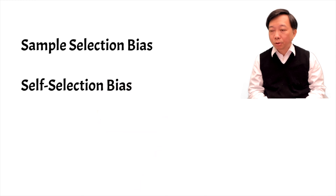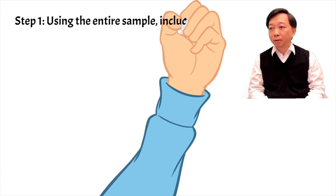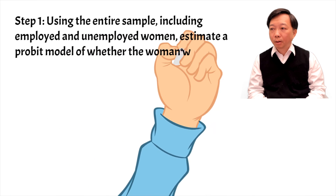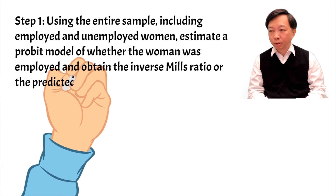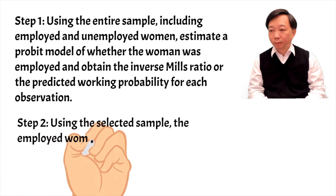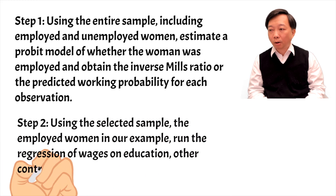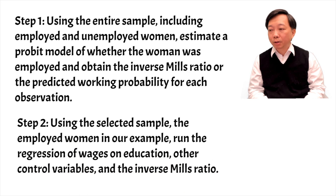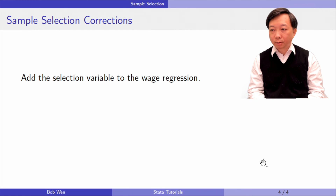We follow Heckman's two-step procedure to alleviate the sample selection bias. In the first step, using the entire sample including employed and unemployed women, we estimate a probit model of whether the woman was employed. In the second step, using the selected sample — the employed women in our example — we run the regression of wages on education, other control variables, and the inverse Mills ratio. The idea is that we control for sample selection bias by adding an additional selection variable to the model and therefore obtain a consistent estimate.